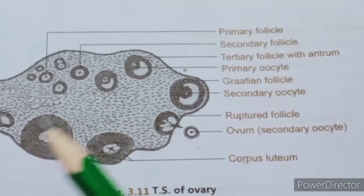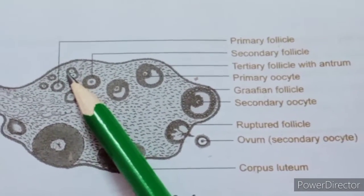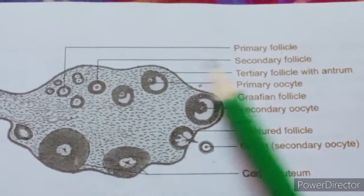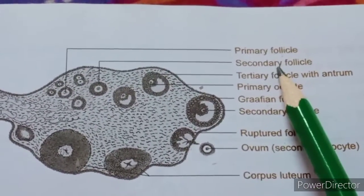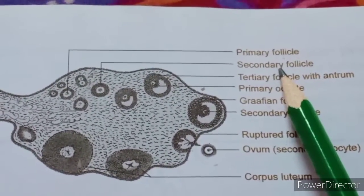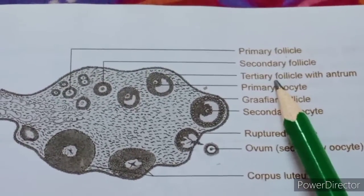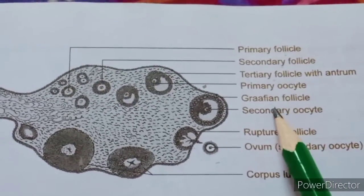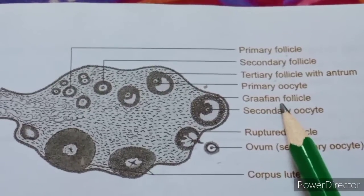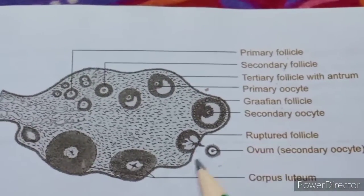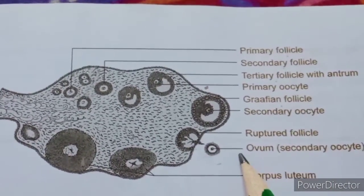These immature cells are called primary follicles. They mature stage by stage: primary follicles mature into secondary follicles, secondary into tertiary follicles, and finally reach the last stage called the Graafian follicle, which is the matured follicle. From the matured follicle, the ovum is released at the time of puberty.